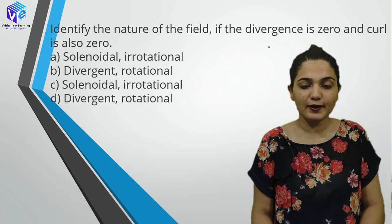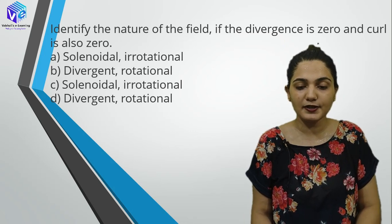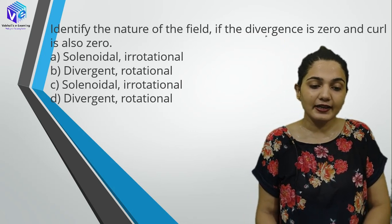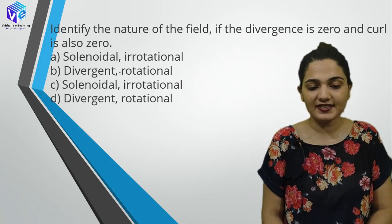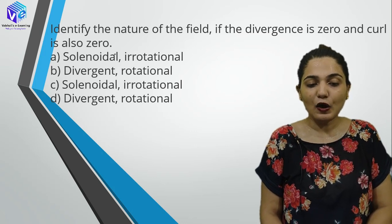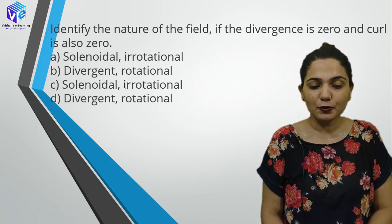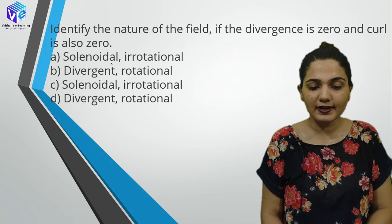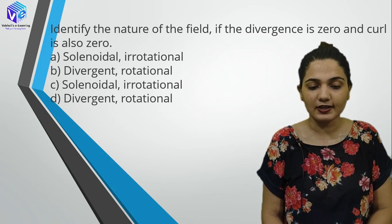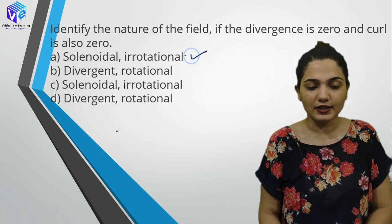Identify the nature of a field when divergence = 0 and curl = 0. When divergence is 0, the field is solenoidal. When curl is also 0, the field is irrotational. So the field is both solenoidal and irrotational.